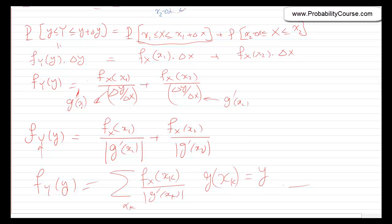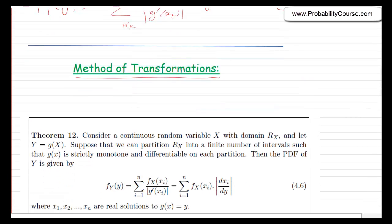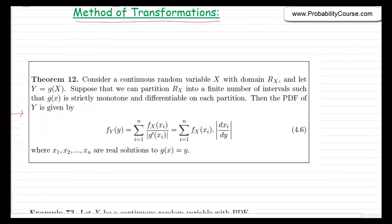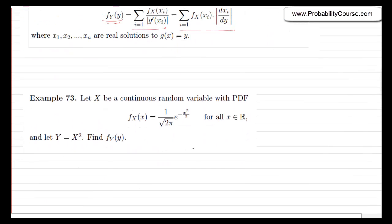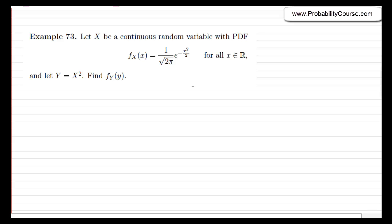This is the general formula, and if it looks a little strange, don't worry because I'm going to solve one example to show exactly how to use this method. So this is the method of transformations — a cleaner way to write the formula: the pdf of y is written as a sum. Let's look at one example: x is a continuous random variable and we know its pdf, and we are interested in finding the pdf of y defined as y equals x squared.